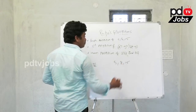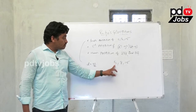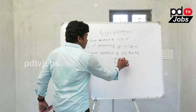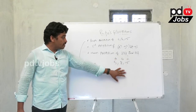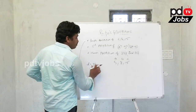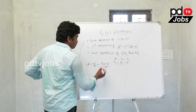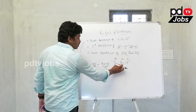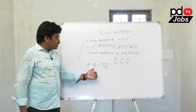The given question is: find the fourth proportion of values 5, 8, 15. Here we take a = 5, b = 8, and c = 15. Using the formula d = bc/a, with b = 8, c = 15, and a = 5.